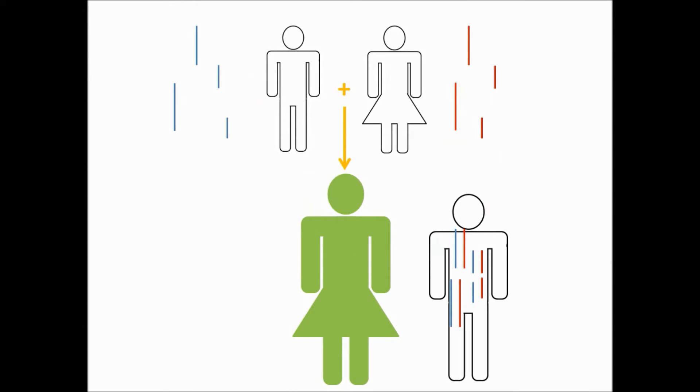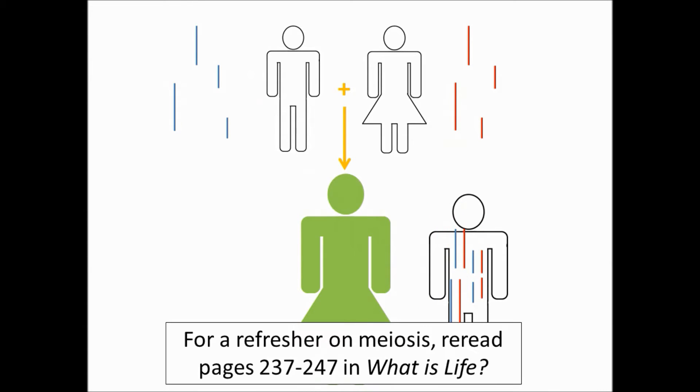If you have a full sibling, they also received half of their genes from your mother and the other half from your father. Because of meiosis, you and your sibling have on average half the same genes as one another, and thus have a relatedness of 0.5.